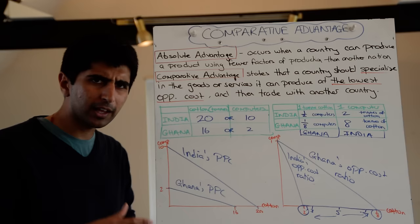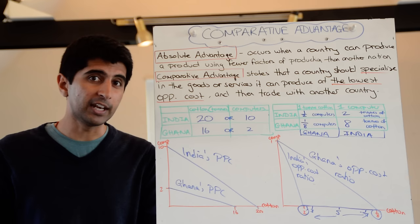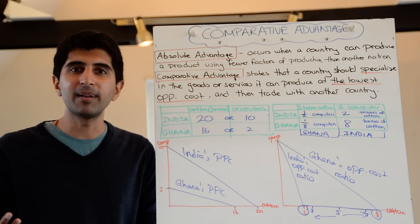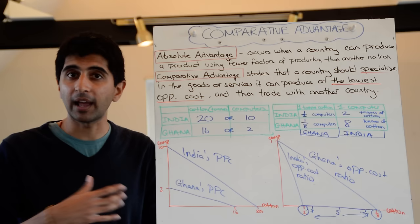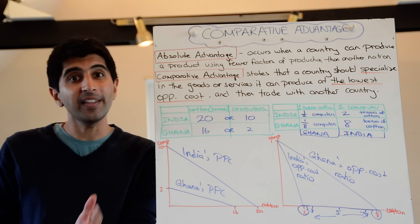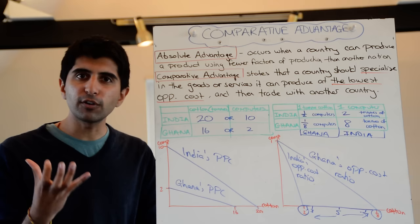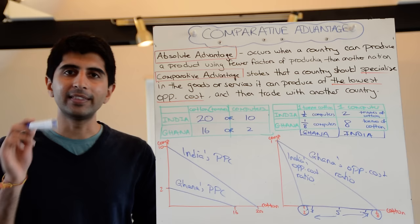The last thing I want to talk about is what determines whether a country has a comparative advantage. Very simply, it comes down to the quantity and quality of factor endowments in a given nation. Why is Ghana specialising in cotton? Maybe because they have an abundance of cotton plants and fertile soil — that's just the luck of their factor endowment, the luck of the land suitable for producing cotton. For India, it might be the quality of their labour force and the skills their labour have, which lend themselves very well to producing computers. So the quantity and quality of factor endowments in a given nation will determine what goods and services that nation has a comparative advantage in.